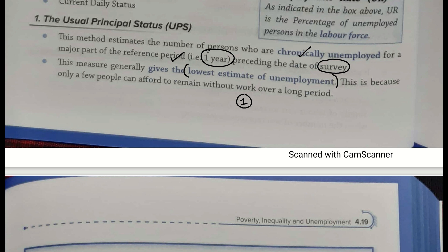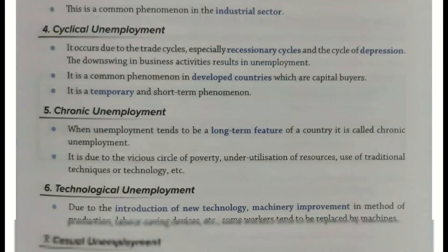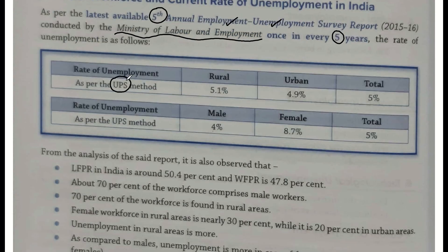Kyunki maximum agar koi berozgaar baitha hoga jo ki physically-mentally fit bhi hai, kaam bhi karna chahta hai, sab kuch hai uske paas, aur woh working age group ka part bhi hai — 15-60 saal ka hai. Toh ab yeh jo survey har 5 saal mein conduct hota hai, toh sabse zyada reference period un teeno methods mein UPS ka hi hai na? Ek saal se zyada toh koi purana nahi hai reference period jismein liya jaaye. Is se highest precise aankde aa jaate hain, broader level par aankde aa jaate hain.